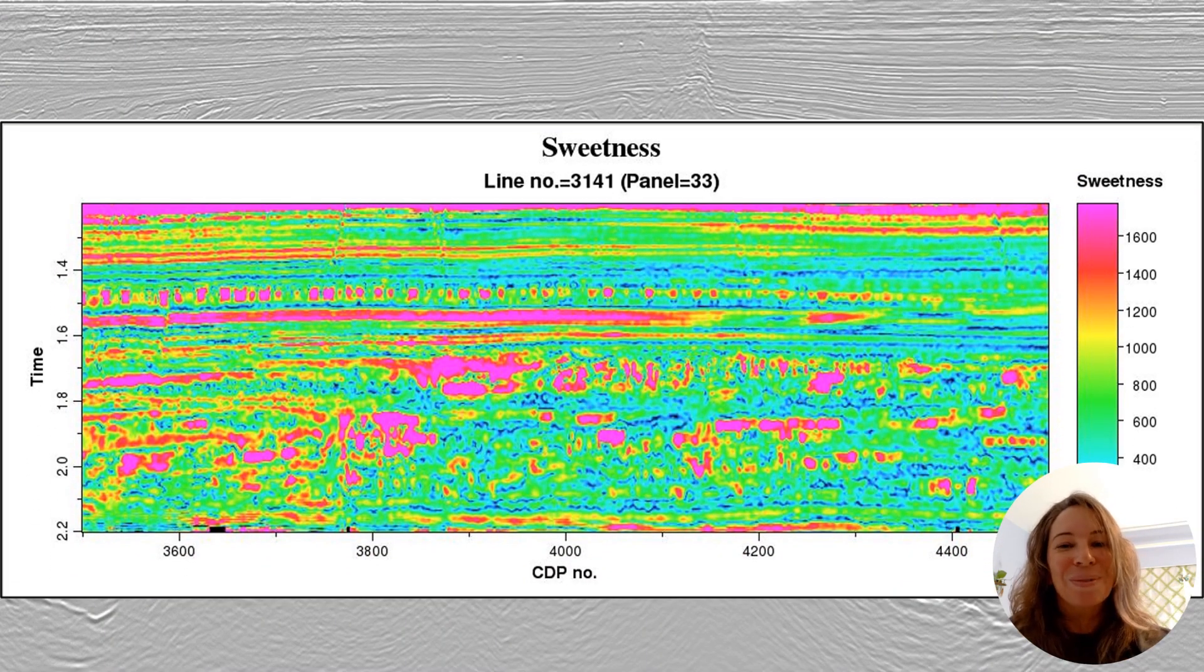Now I want to end with my favorite instantaneous attribute, one that we're using all the time in my research group. This is the sweetness attribute, introduced back in 1998 by Radovich and Oliveira. It combines the envelope and the frequency information, specifically the envelope over the square root of frequency. In this example, you can notice how the sweetness helps identify the sandier facies within a shale matrix, which is a game changer for lithologic identification.